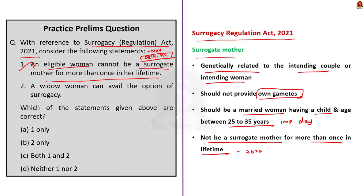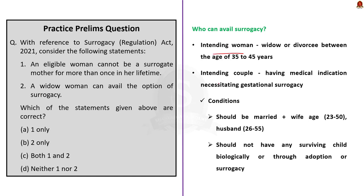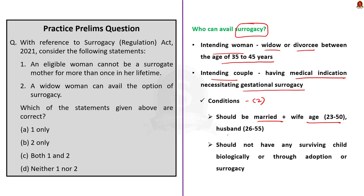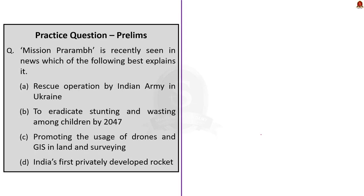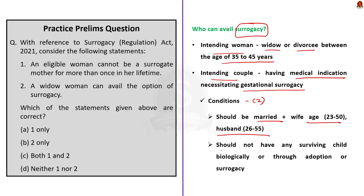Second statement says a widow woman can avail the option of surrogacy — this is also correct. Per the Act, intending women means an Indian woman who is a widow or divorcee between 35 to 45 years intending to avail surrogacy. Intending couple means a couple with medical indication necessitating gestational surrogacy, who must be married with the wife between 23 to 50 years and husband between 26 to 55 years on the day of certification. The intending couple should not have any surviving child biologically, through adoption, or through surrogacy. The correct answer is option C — both 1 and 2.